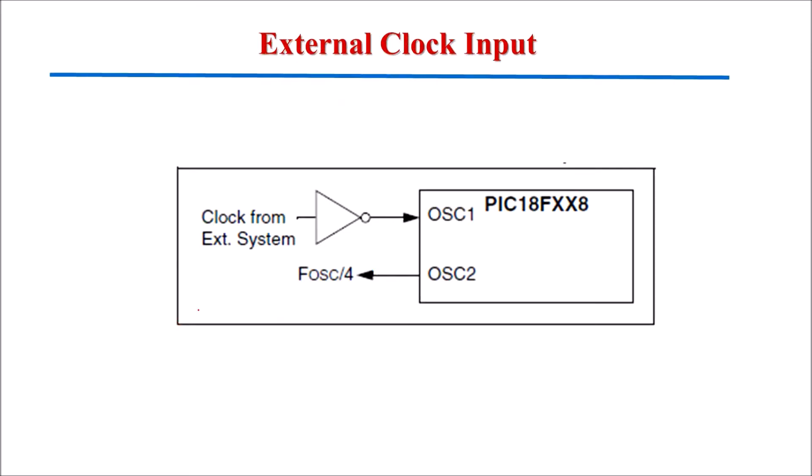Next is the external clock input, the EC oscillator circuit. This EC oscillator requires an external clock source that should be connected to oscillator 1 pin. The clock from the external system is connected to oscillator 1 pin — that is the simple EC configuration. The feedback device between oscillator 1 and oscillator 2 is turned off in this mode to save current. There is no oscillator start-up time required after a power-on reset or after a recovery from sleep mode. The oscillator frequency is divided by 4 and that is available at oscillator 2 terminal, which can be used for test purposes or to synchronize other devices.